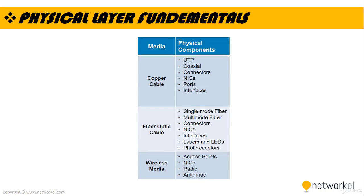The fundamentals of the physical layer involve three media types. The first is copper cable, the second is fiber optic cable, and the third is wireless media. In copper cable media, physical components include UTP cable, coaxial cable, connectors, network interface cards, ports, and interfaces. In fiber optic media we have lasers, LEDs, and photoreceptors. In wireless media, physical components include access points, wireless network interface cards, radios, and antennas.